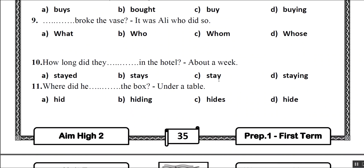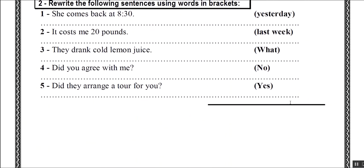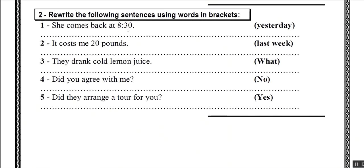Where did he hide the box? Under a table. She comes back at 8:30 yesterday. She came back at 8:30 yesterday. It costs me 20 pounds last week. It cost me 20 pounds last week.